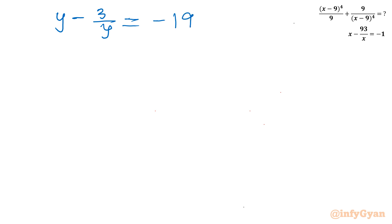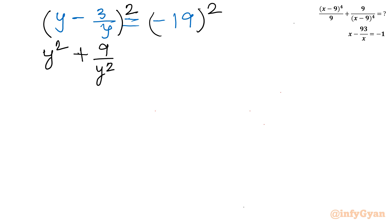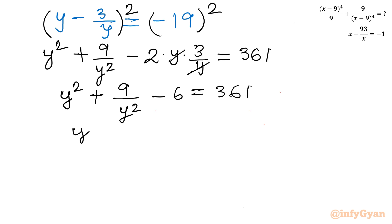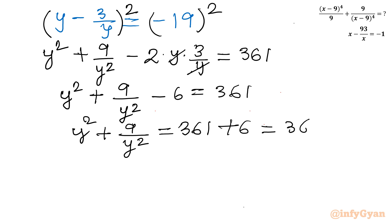Now I will consider squaring both sides. Squaring the left side gives y squared plus 9 over y squared minus 2 times y times 3 over y. The right hand side is 19 squared, which is 361. Cancelling y with y, this converts to y squared plus 9 over y squared minus 6 equals 361, or y squared plus 9 over y squared equals 361 plus 6, which equals 367.